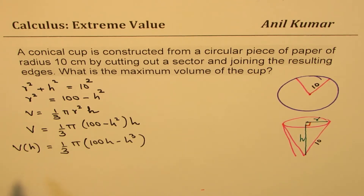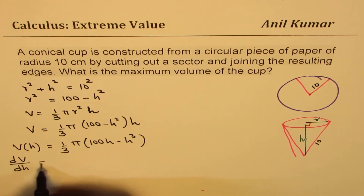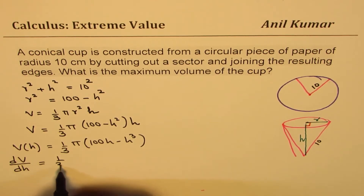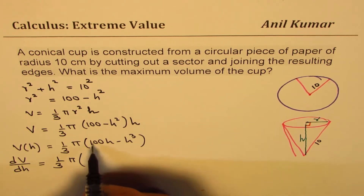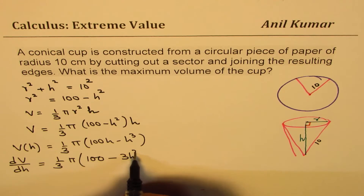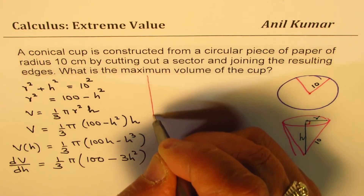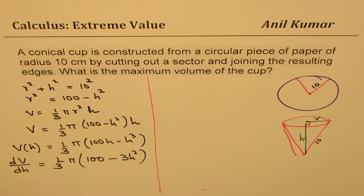Now if I differentiate V with respect to H, we get dV/dH = (1/3)π(100 − 3H²). That is the derivative of the volume function. To get the maximum volume, we equate this to zero to find the critical number.